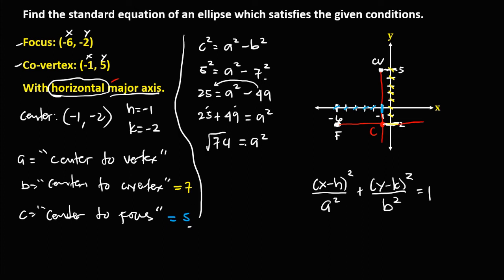Taking the square root, a is equal to the square root of 74. Now that we have all four values — h, k, a, and b — we can solve for the standard equation of this ellipse using the formula.